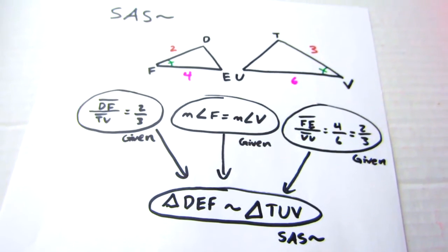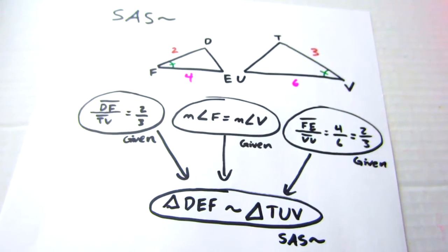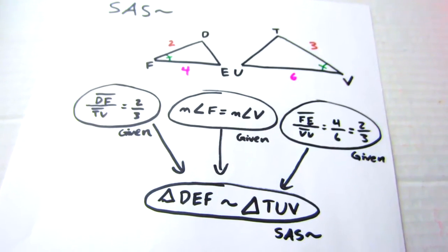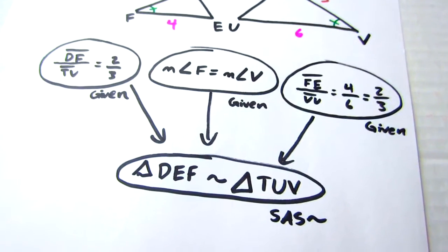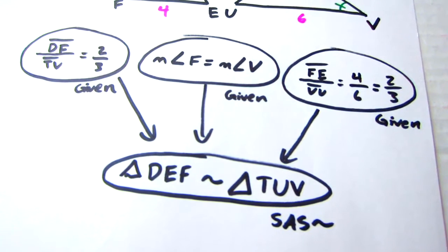the middle angle needs to have the same measure in both triangles. In this case, you can see that I have proven side angle side similarity for the two triangles.